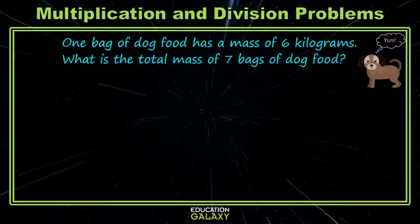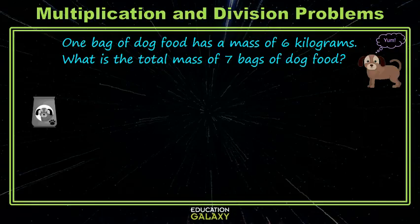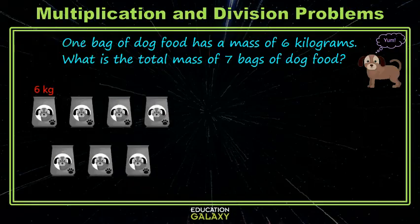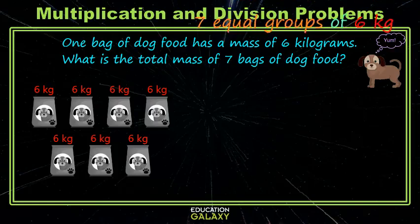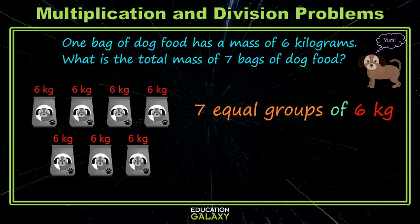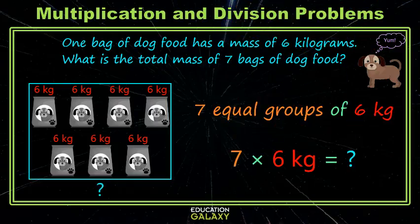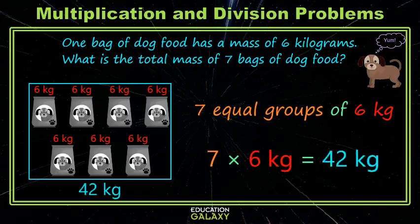Okay, so we have one bag of dog food. It has a mass of six kilograms. We want to know the total mass of seven bags. So let's bring in one bag and put its mass — six kilograms. And now we need the total for seven bags, so let's get the other bags in here and get their mass labeled. So here we have seven equal size groups of six, and we're looking for a total, so we use multiplication. Seven times six is 42. So our seven bags of six kilograms each have a total of 42 kilograms.